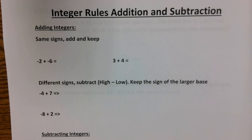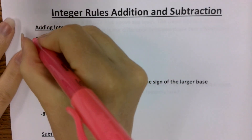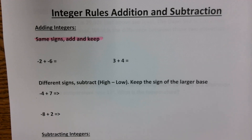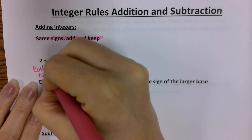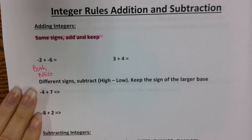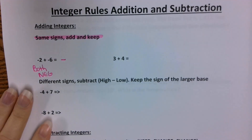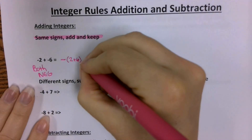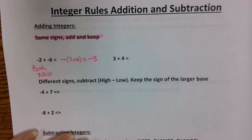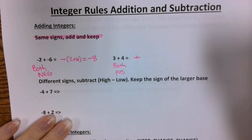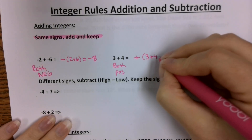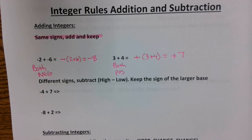Here are our integer rules. If you are adding integers with the same signs, you keep the signs and add them together. For example, negative 2 plus negative 6 — they're both negative, so we keep the sign as negative and add the bases: 2 plus 6 equals negative 8. You already knew this for positive numbers: 3 plus 4, you keep the sign positive and add, giving you positive 7. When they're the same signs, you add the two base numbers together and keep the sign.